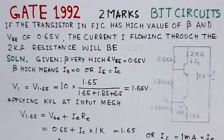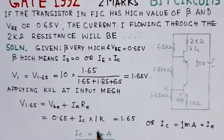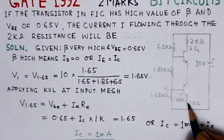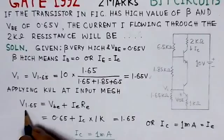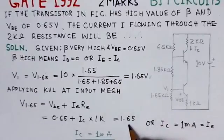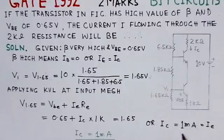We can write 0.65 + IC × 1k, where 1k is the value of this resistance. From this, we know V1.65 = 1.65V. This comes out to be IC = 1 milliampere, and this is also equal to IE.